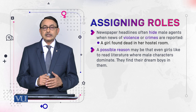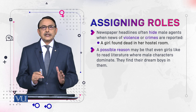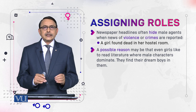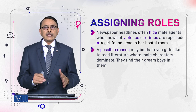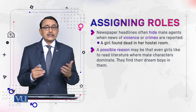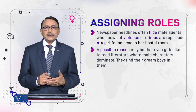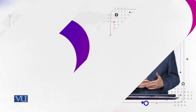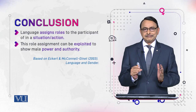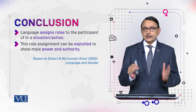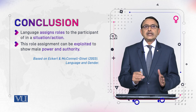A possible reason why males are given this dominant role in stories and literature is that girls like males as main characters, because they dream of their ideal person and ideal personality through these male characters. So we conclude: language assigns roles to the participants of a situation, and these roles are assigned by the meaning of the verb.